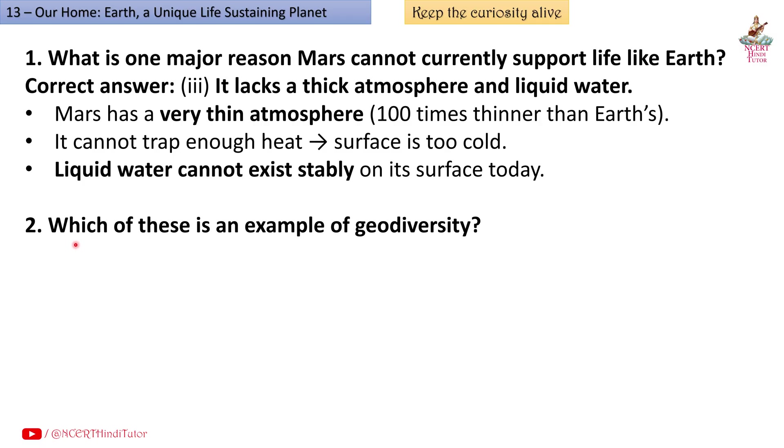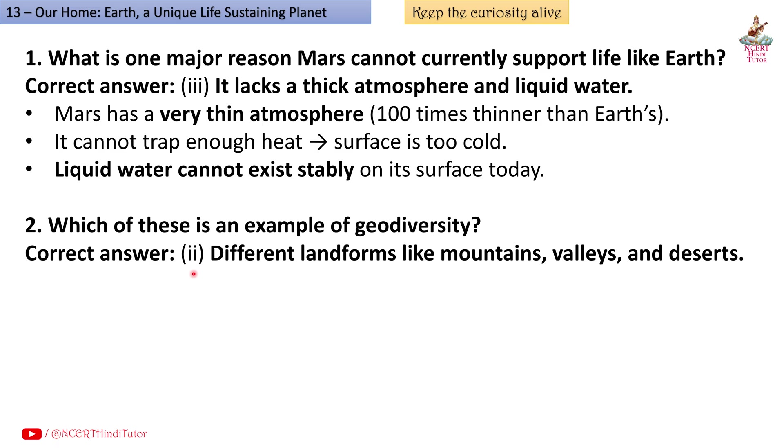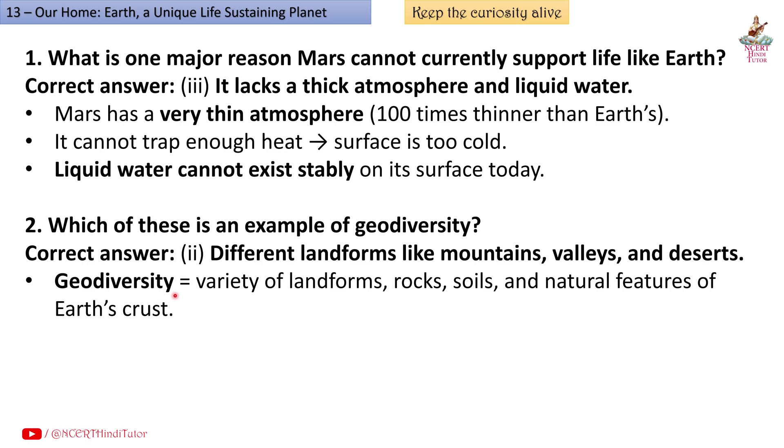Question 2: Which of these is an example of geodiversity? Correct answer: Second, different landforms like mountains, valleys and deserts. Geodiversity is a variety of landforms, rocks, soils and natural features of Earth's crust. It creates different habitats for life.